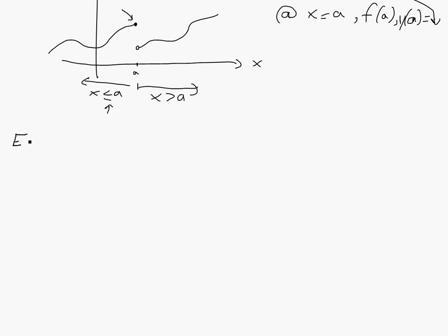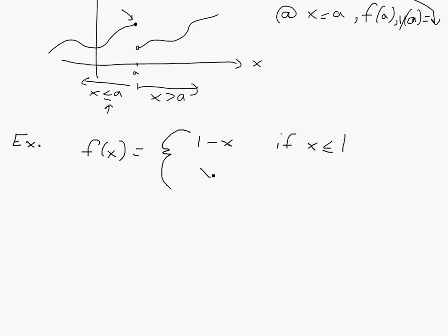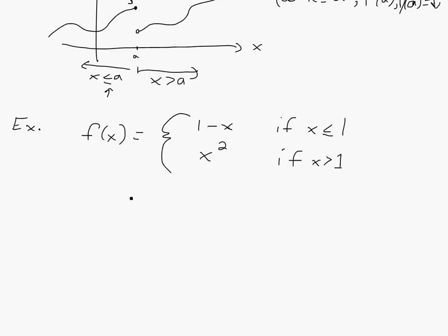I'll show you an example. So let's say we have f(x) equals — this is basically what we would do — we would break it up into two parts like this. One minus x if x is less than or equal to one, and it equals x squared if x is greater than one. So all we're doing is using two equations. This is an example of a piecewise function.